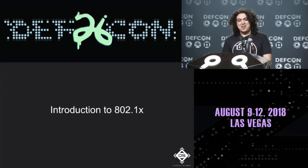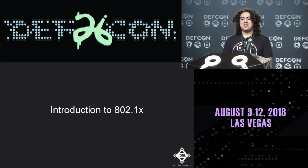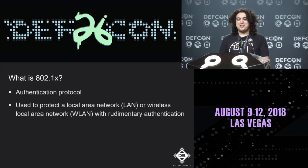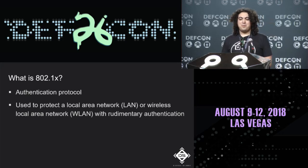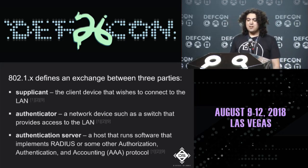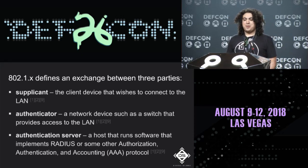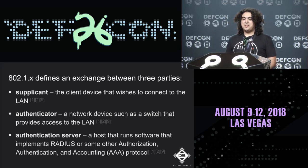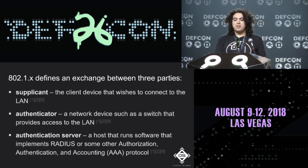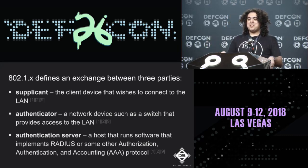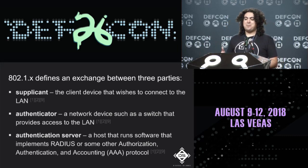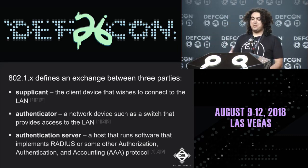This talk is about bypassing port security technology. Before we get started, we need to go over introductory information about 802.1X. 802.1X is an authentication protocol designed to provide rudimentary authentication to local area networks and wireless local area networks. The protocol defines an exchange between three parties: the supplicant, the authenticator, and the authentication server.